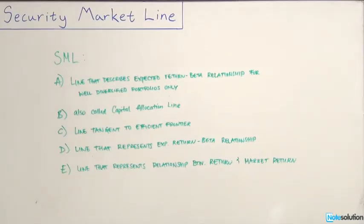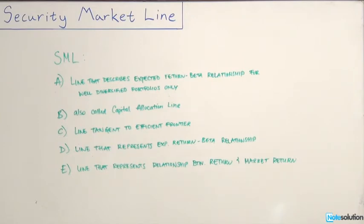Here we have an intermediate level question relating to the concept of a security market line. It's a multiple choice and it's asking us to pick the best answer. The question is: the security market line is A, the line that describes the expected return beta relationship for well diversified portfolios only.